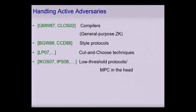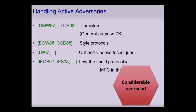In the literature, there is a variety of techniques on how one would obtain protocols which are actively secure. We have generic compilers, we can use BGW and CCD-style protocols, cut-and-choose techniques, low-threshold protocols and MPC-in-the-head techniques, but what all of this has in common is that the overhead they require is quite considerable, both asymptotic and concrete.